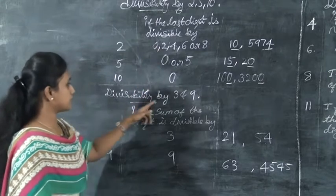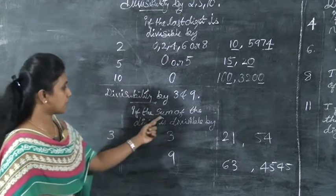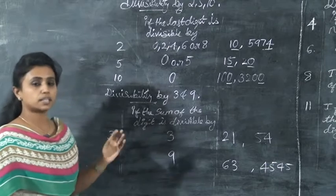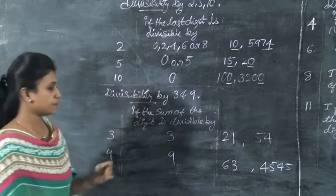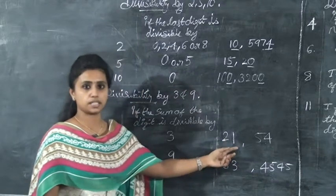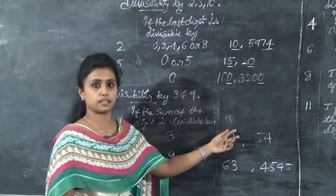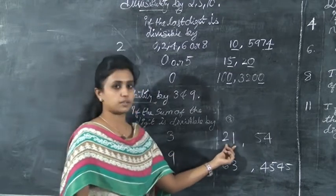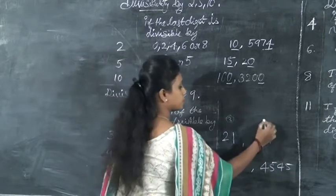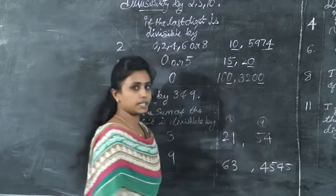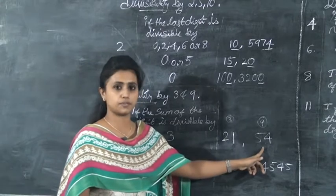Next is divisibility by 3 and 9. A number is divisible by 3 if the sum of its digits is divisible by 3. For example, 21: the sum of digits is 2 plus 1, which is 3, and 3 is divisible by 3, so 21 is divisible by 3. Another example, 54: 5 plus 4 is 9, and 9 is divisible by 3, so 54 is divisible by 3.